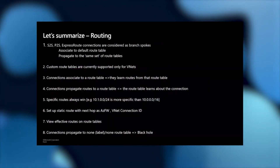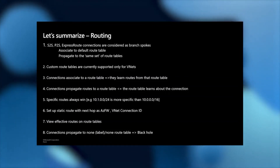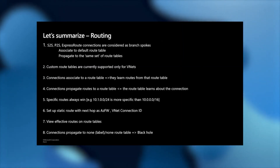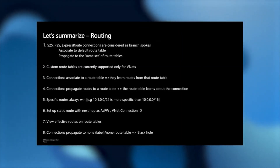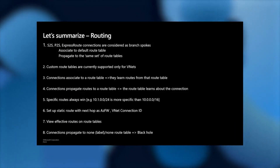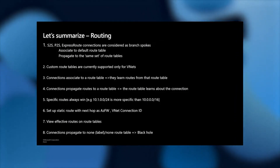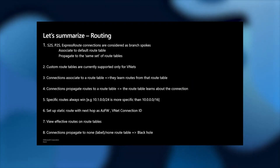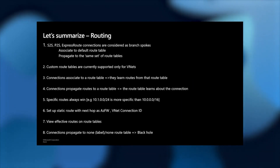To summarize: branches is a collective term for site-to-site, point-to-site, and ExpressRoute connections. They associate to the default route table and propagate to the same set of route tables. For custom route tables, they apply to VNets — you can set up static routes, view effective routes. If you do not want to propagate routes, you can propagate to something called a none route table, which means the connection does not propagate its routes to any route table.